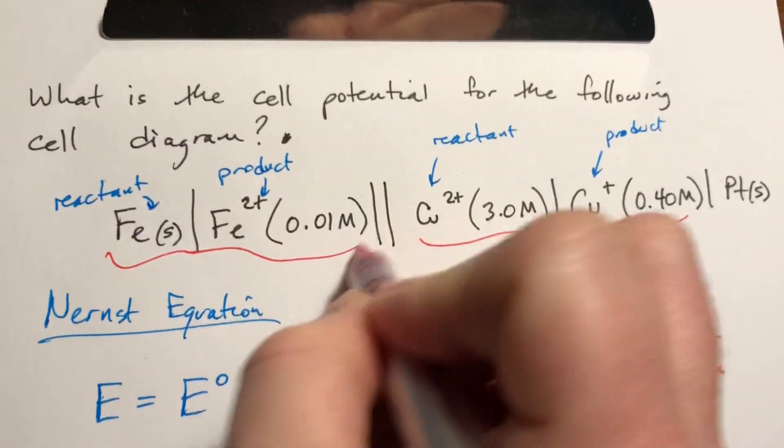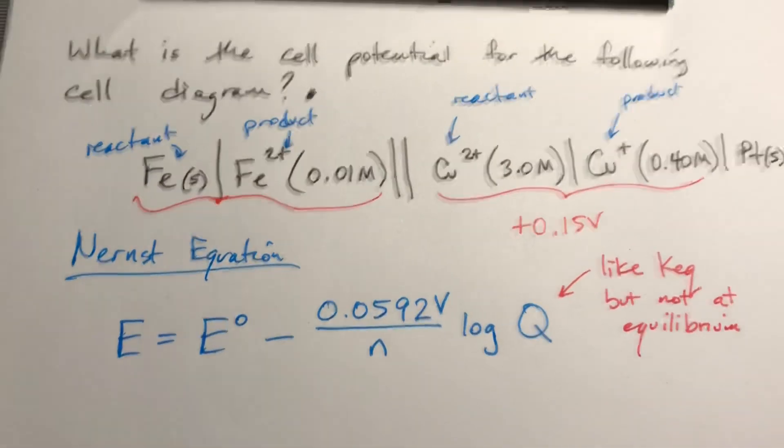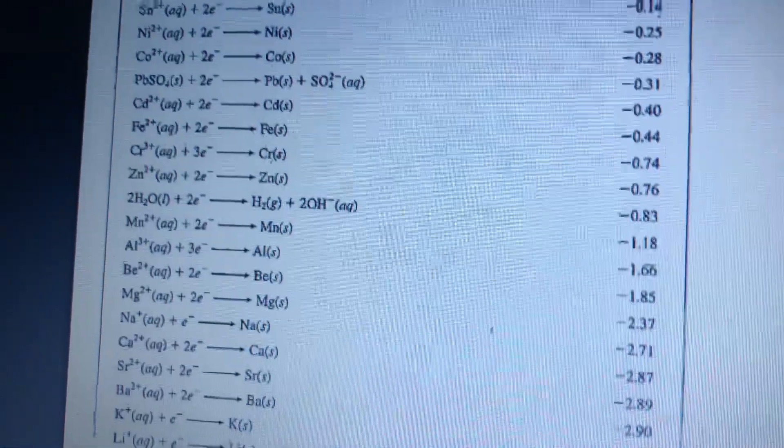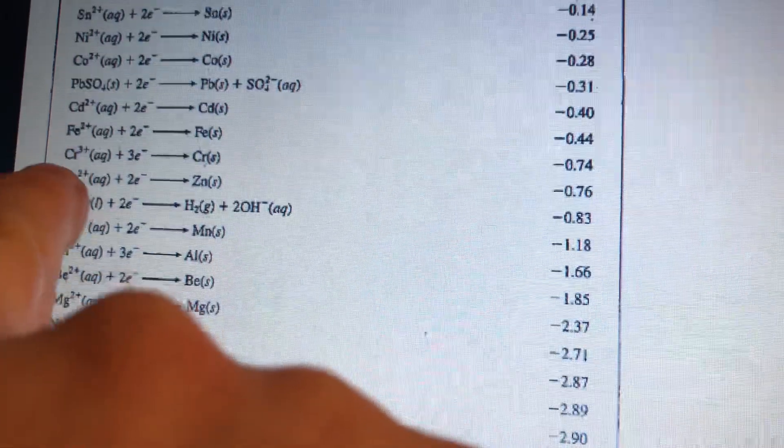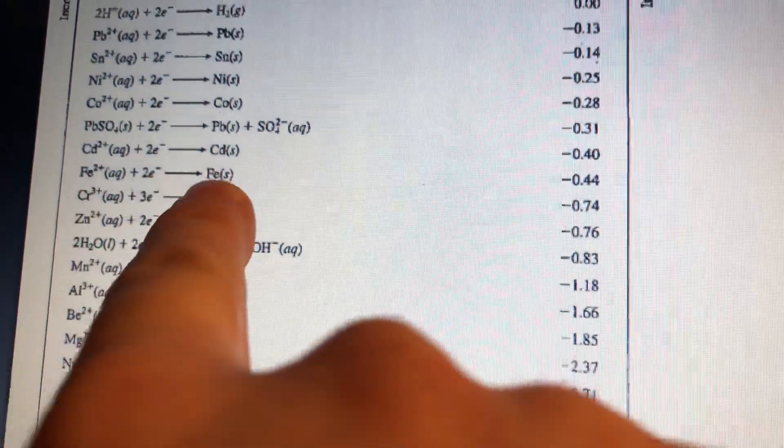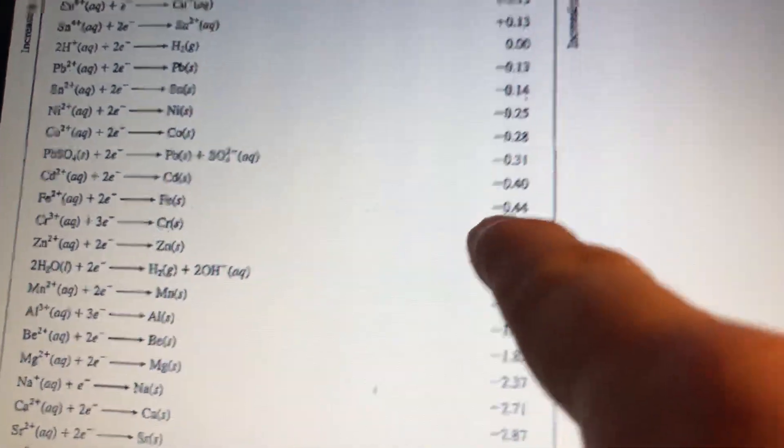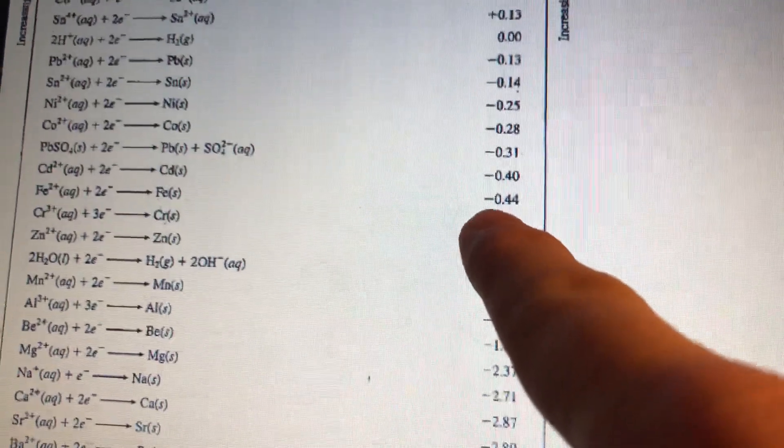Now we need to find this one. So what we have is iron and iron 2+. So if we look up here, we have iron 2+, two electrons, iron solid, and it's negative 0.44 volts.